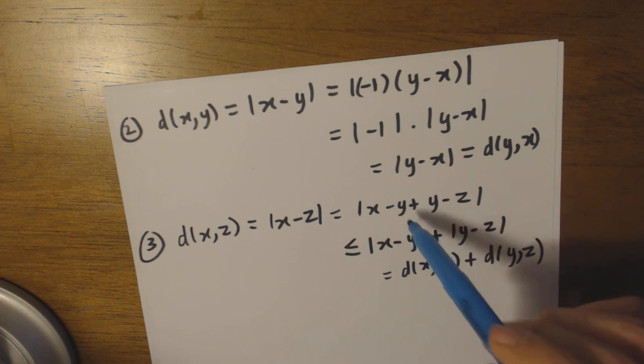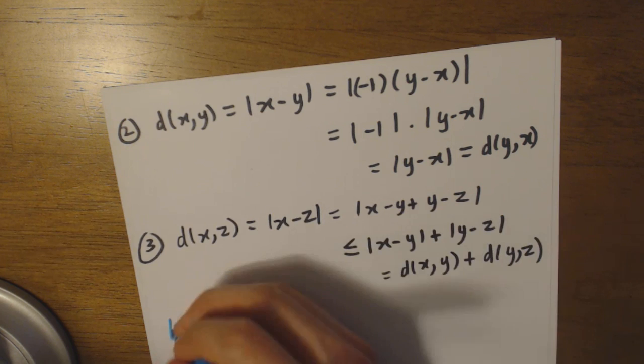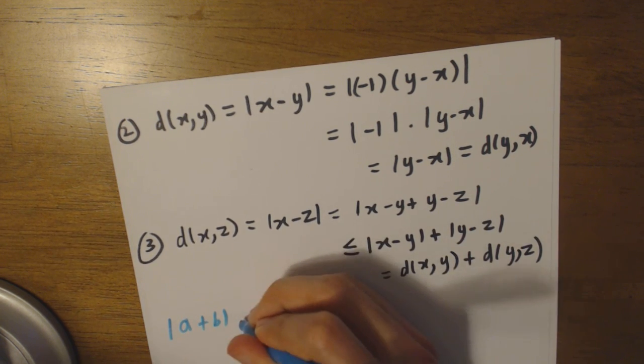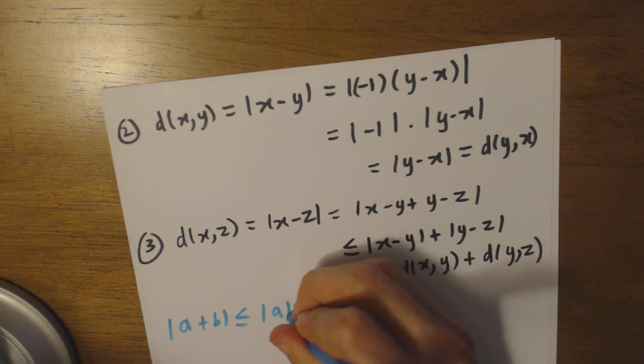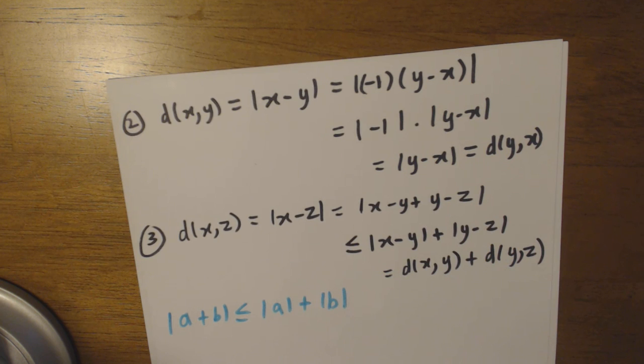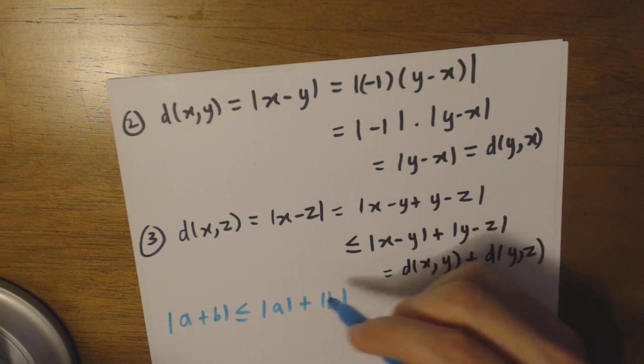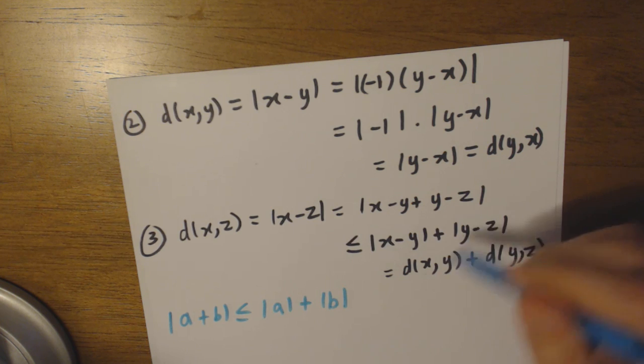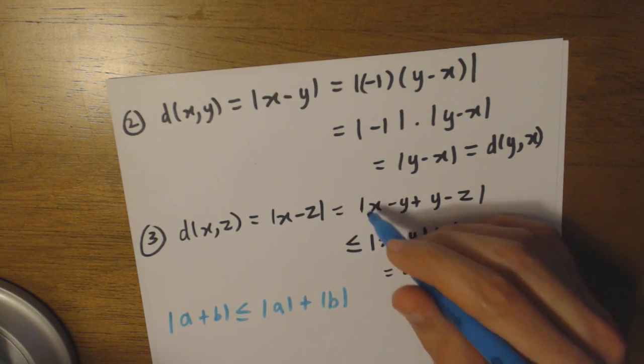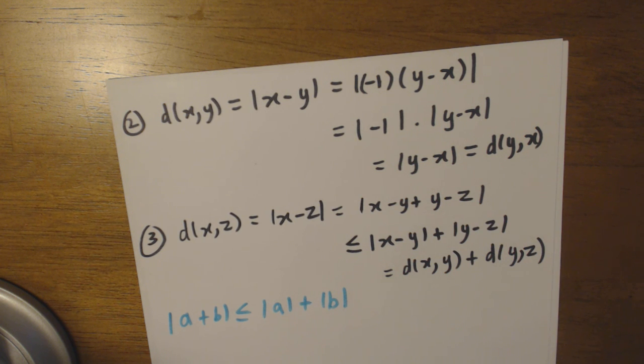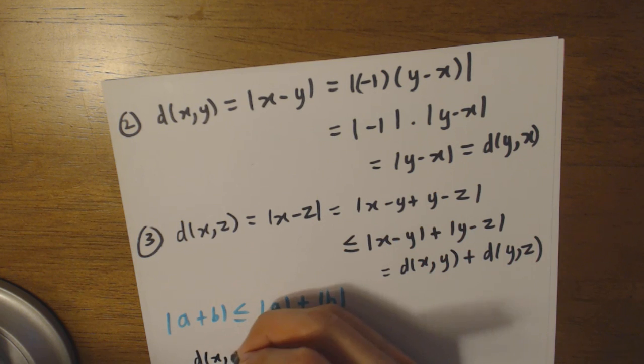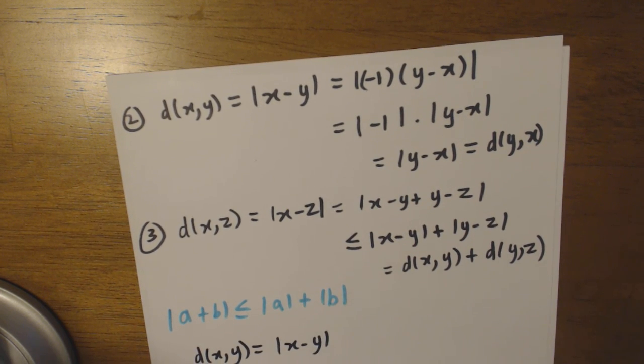We've shown that d(x,z) is less than or equal to d(x,y) plus d(y,z). If you've never seen something like this before, that's fine. If we have an absolute value of a plus b, we know that this is less than or equal to |a| + |b|. Why is this? Because if we have two positive numbers, then separating them won't make any difference. If we have one positive, one negative, then this will be smaller than the two separated and absolute. Then we just substitute x minus y equal to a and y minus z equal to b.